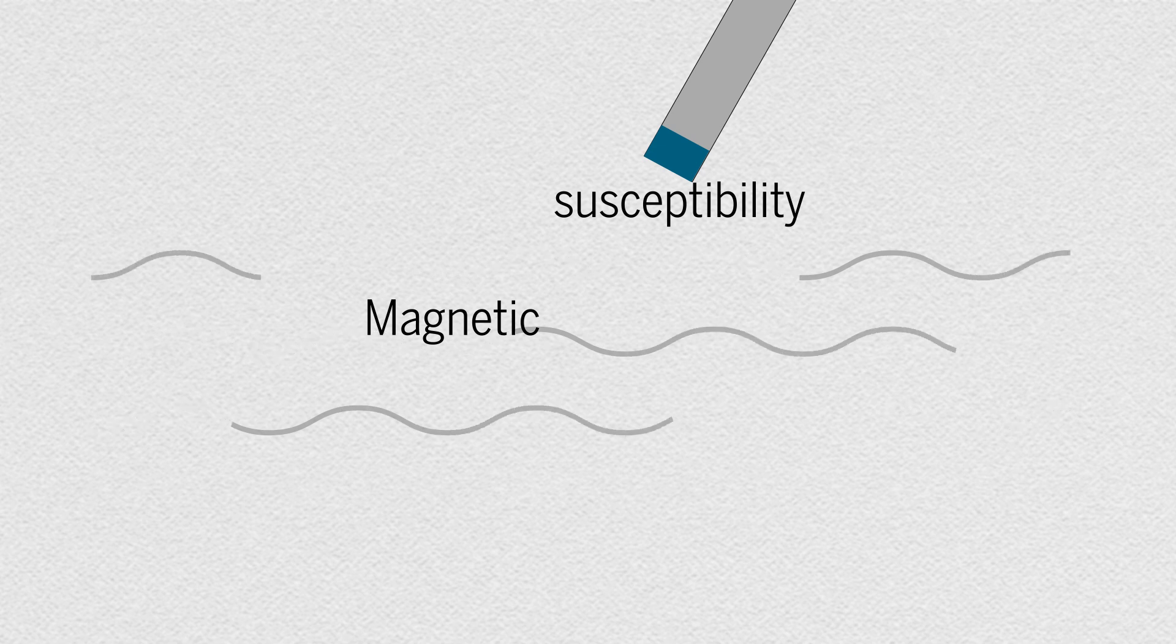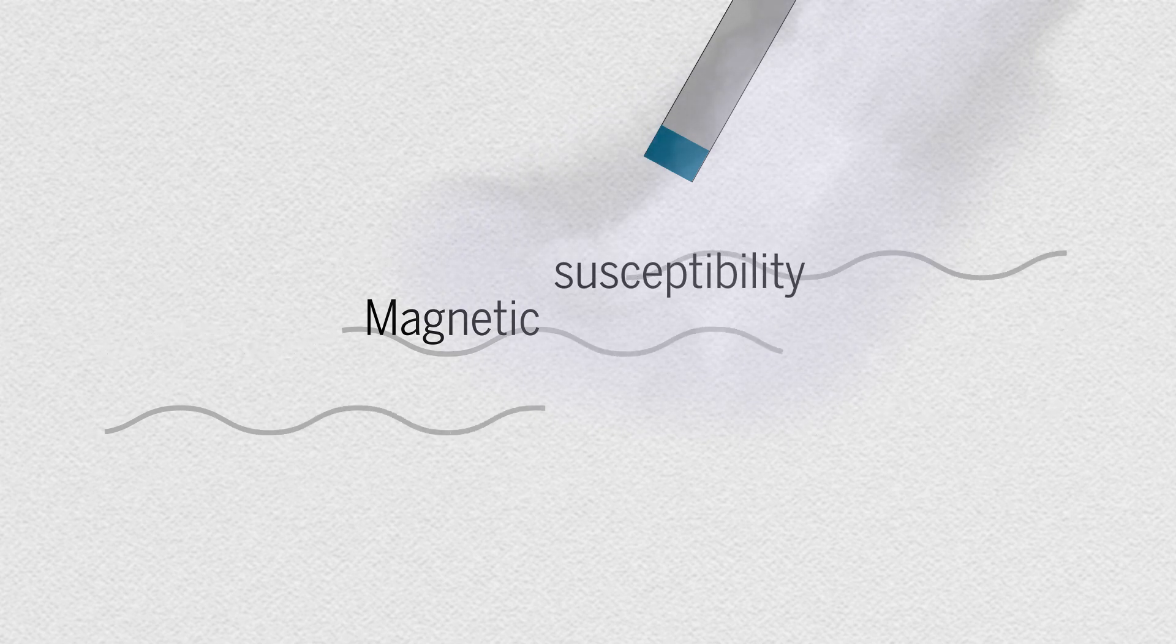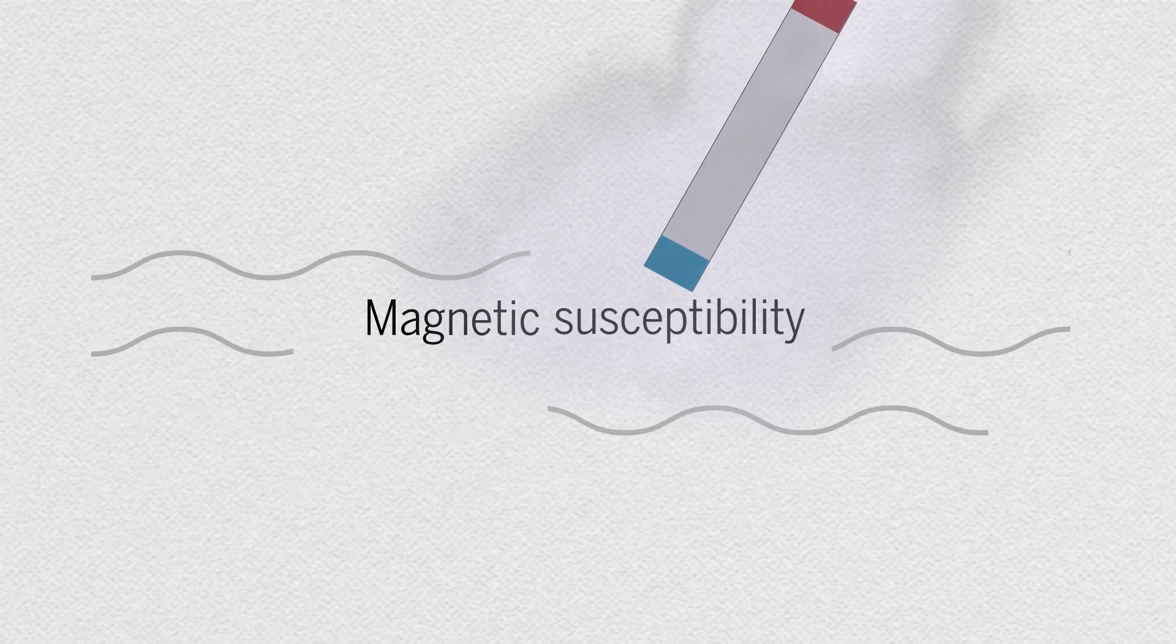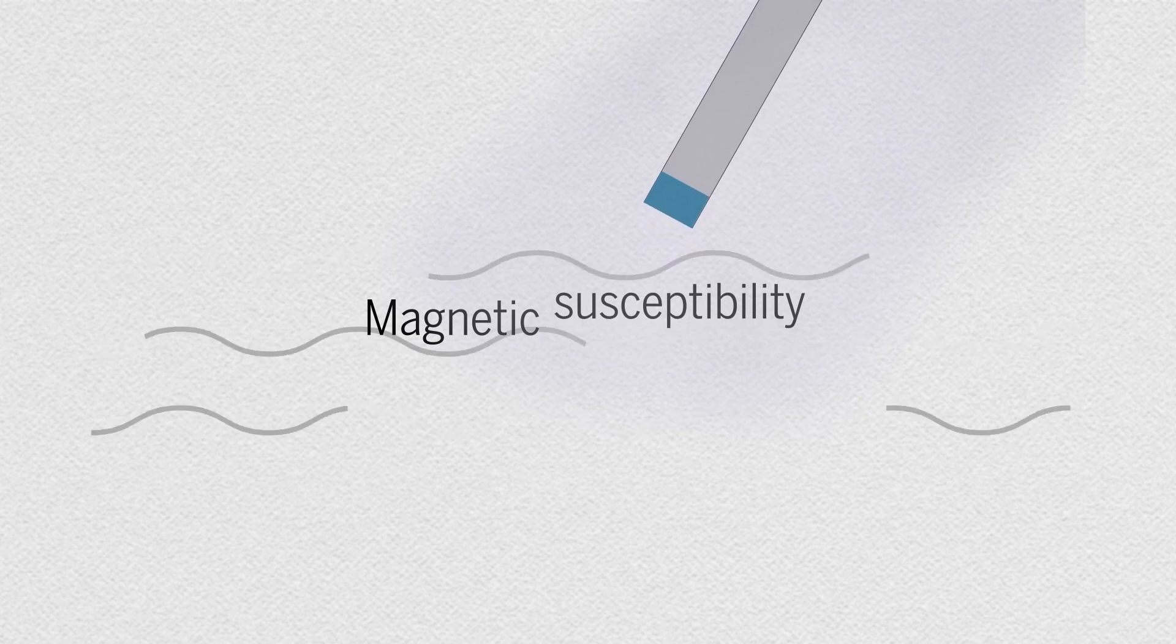Other superconductors become less magnetized as temperature decreases. But carbonaceous sulfur hydride doesn't follow this trend. It initially becomes less magnetized below the critical temperature, where the material begins to superconduct. After further cooling, the reverse happened.